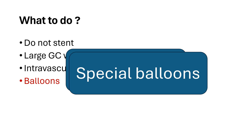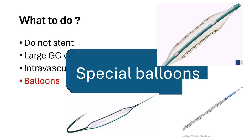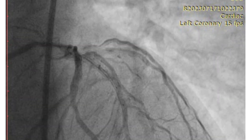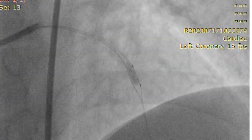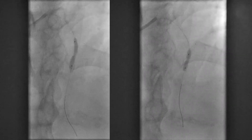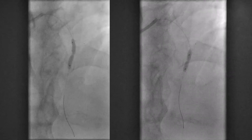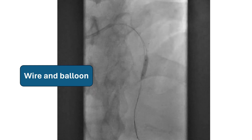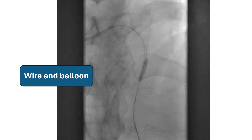The other option is to use special balloons like the cutting balloon, the angiosculpt, or the Scoreflex. In this case, the LAD was not dilatable and a Scoreflex balloon was effective in dilating the lesion. If these are not available, try to pass a wire or two beside the balloon to make it effective as a cutting balloon. In one case, the LAD didn't dilate with a long NC balloon, but passing a wire alongside the same NC balloon at the same pressure was effective in dilating the lesion.